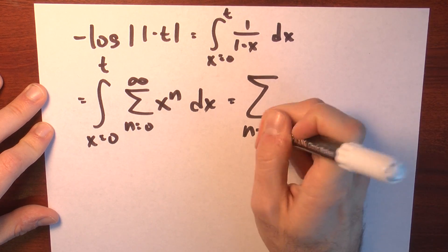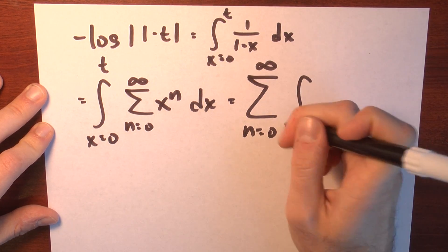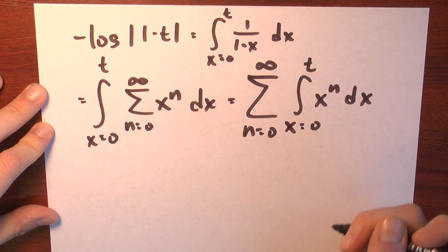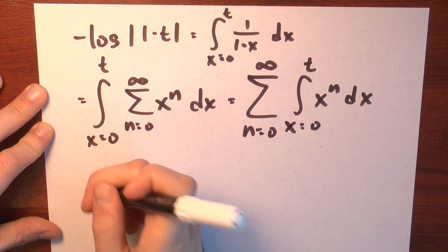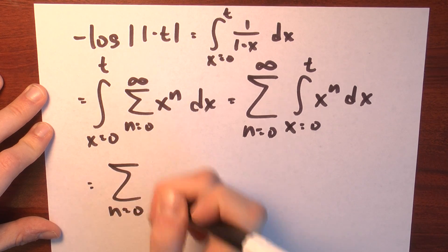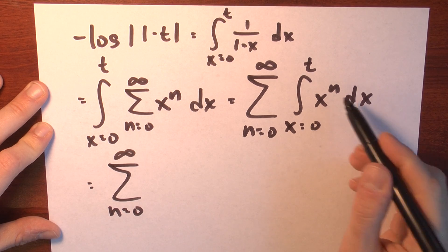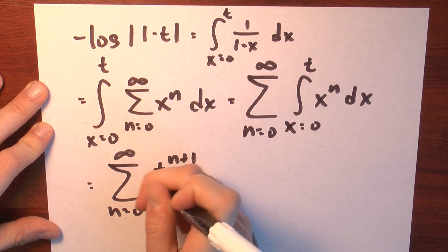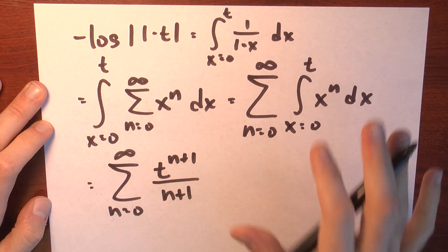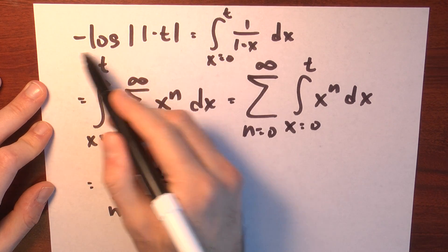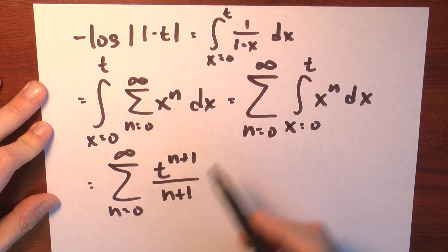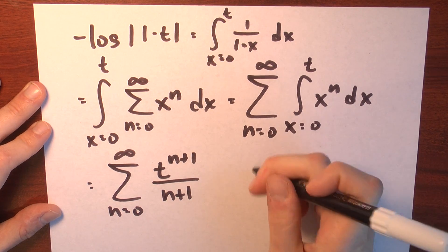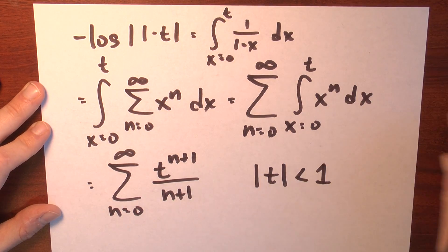Now I'm integrating a power series, and by the theorem I can do that term by term. So this is the sum as n goes from 0 to infinity of the integral of x from 0 to t of x to the n dx. Integrating x to the n from 0 to t gives t to the n plus 1 over n plus 1. So I've found a power series for negative the natural log of the absolute value of 1 minus t, and it's valid as long as t is less than 1 in absolute value.